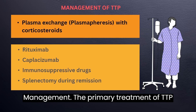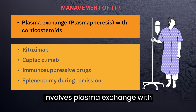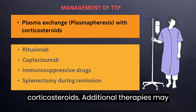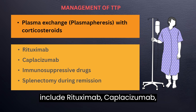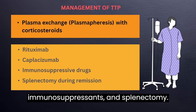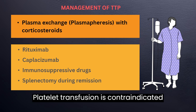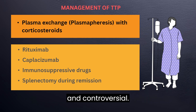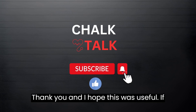Regarding management, the primary treatment of TTP involves plasma exchange with corticosteroids. Additional therapies may include rituximab, caplacizumab, immunosuppressants, and splenectomy. Platelet transfusion is contraindicated and controversial. Thank you, and I hope this was useful.